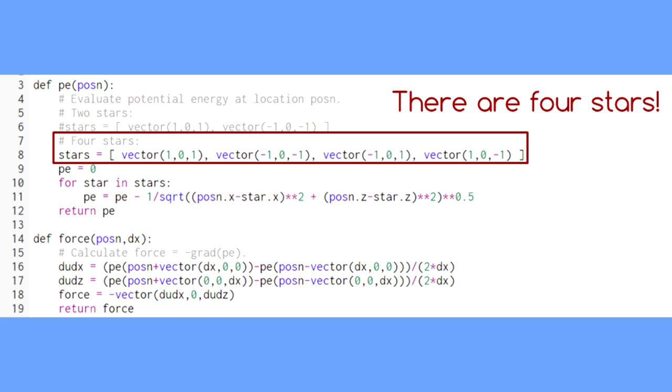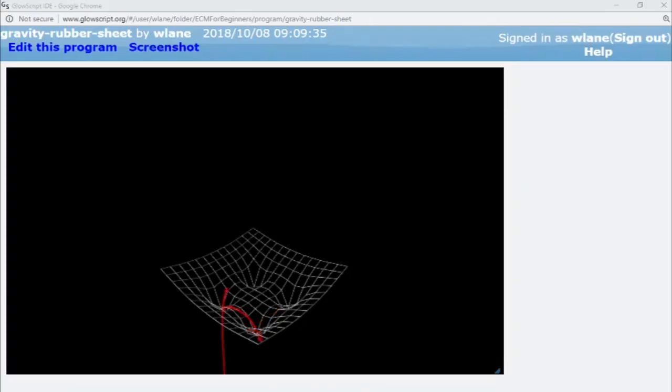Adding more stars is easy. Just enter the positions you want in the list of vectors. With the right combination of initial position and initial momentum, we can get some amazing looking results.